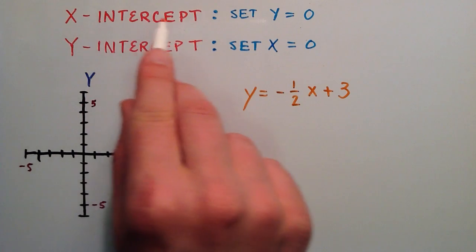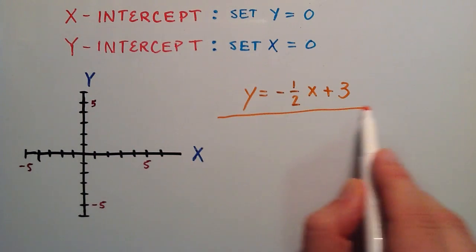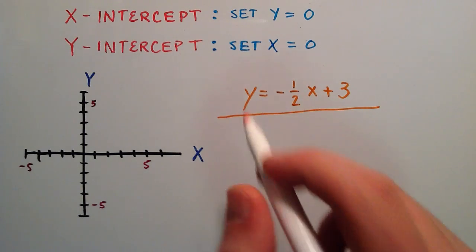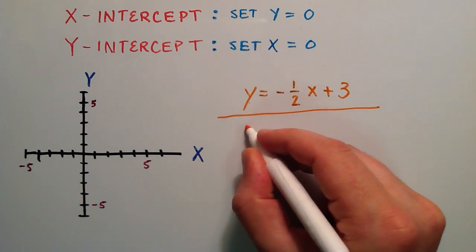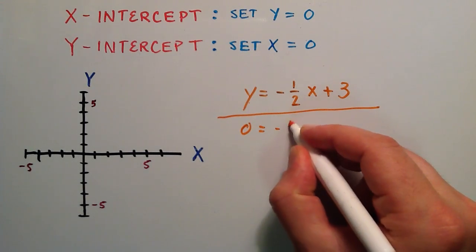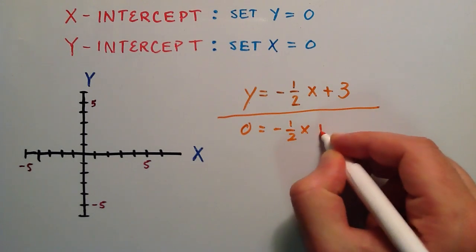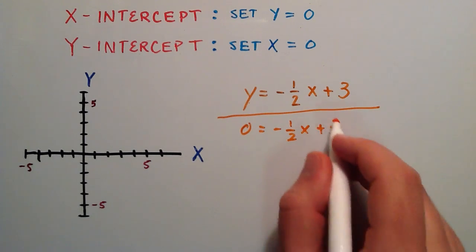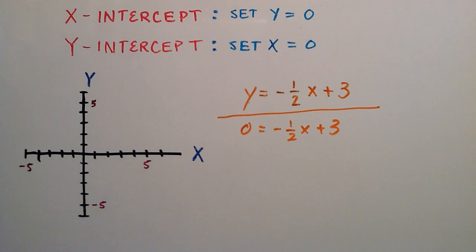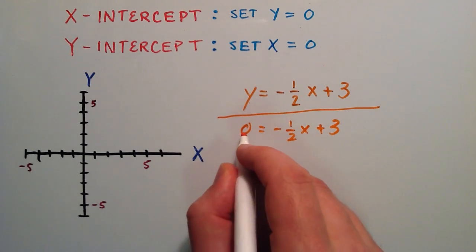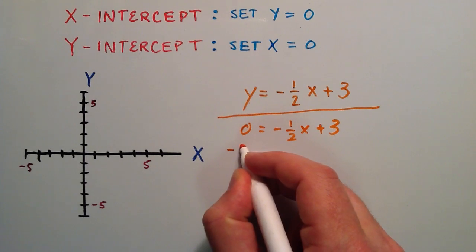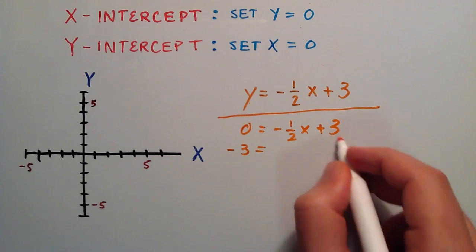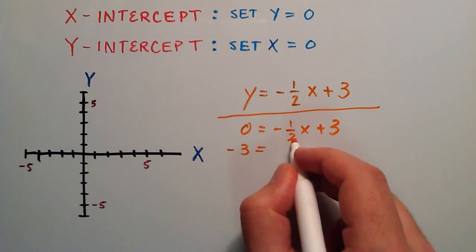Let's go ahead and solve for the x-intercept. We set y equal to 0, so we rewrite the equation with 0 in place of y: 0 equals negative 1 half x plus 3. The first thing we want to do is get rid of this 3, so we subtract 3 from both sides. 0 minus 3 gives us negative 3, and positive 3 minus 3 gives us 0, leaving us with negative 1 half x.